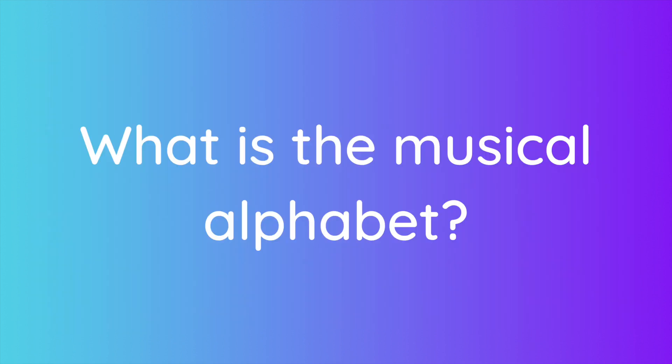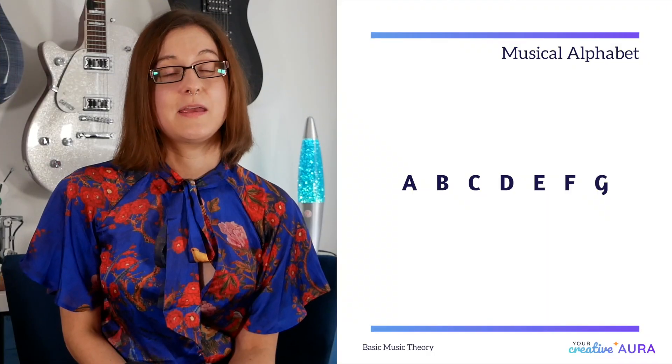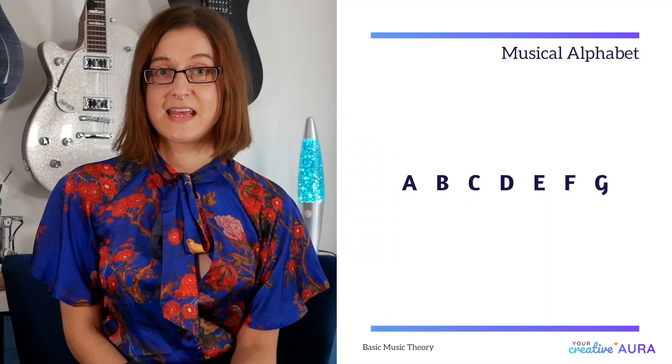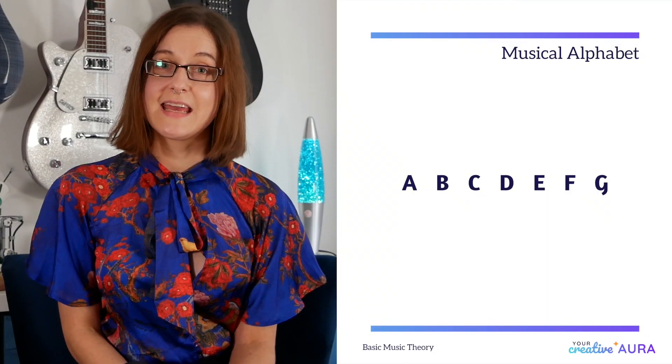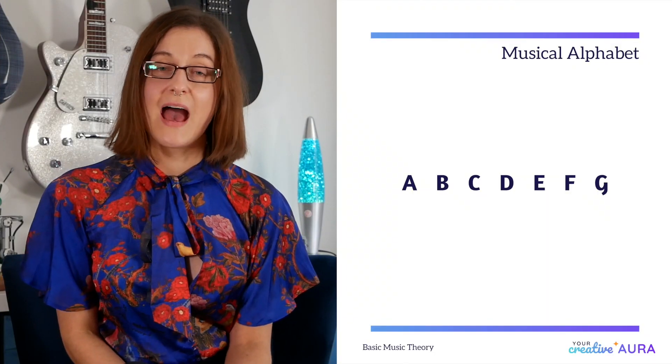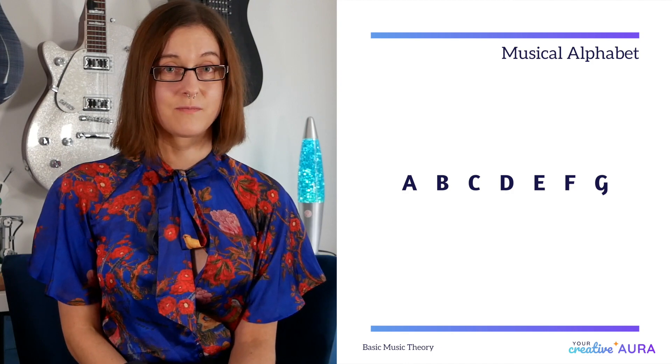What is the musical alphabet? Music is made using the musical alphabet. These are the letters A, B, C, D, E, F and G.